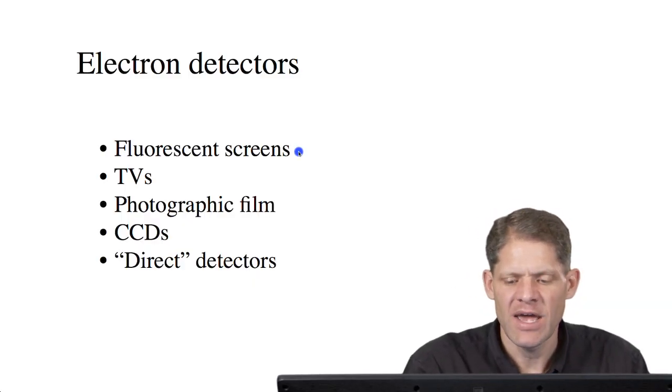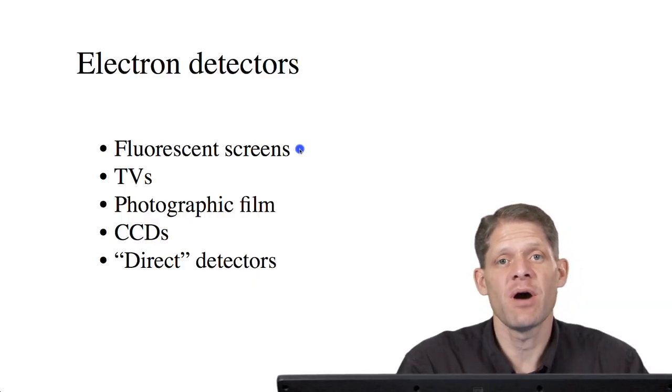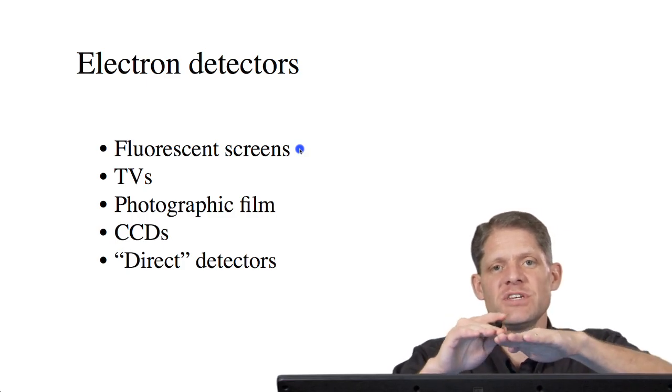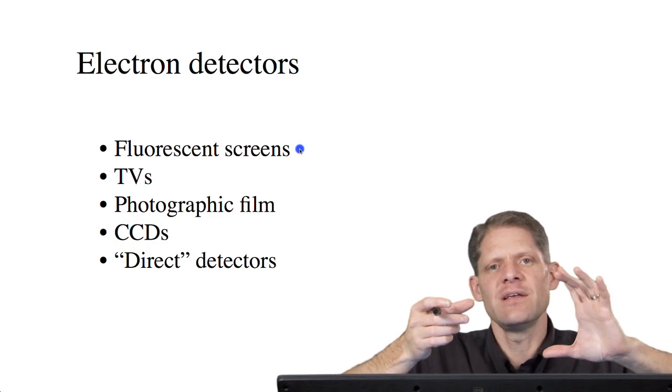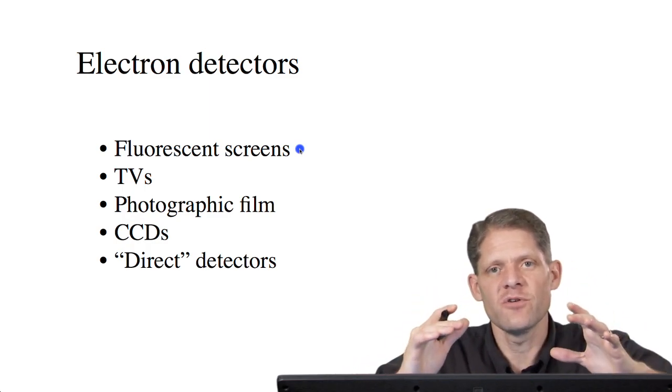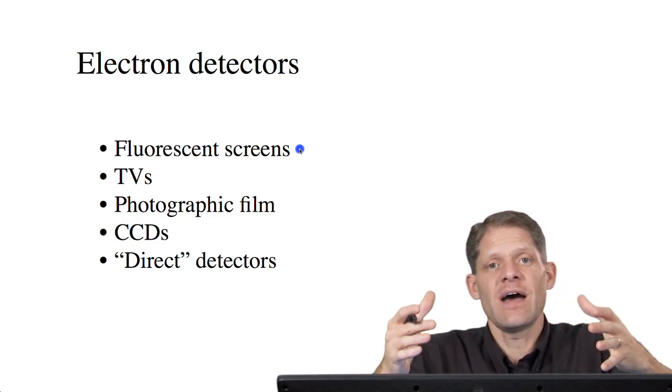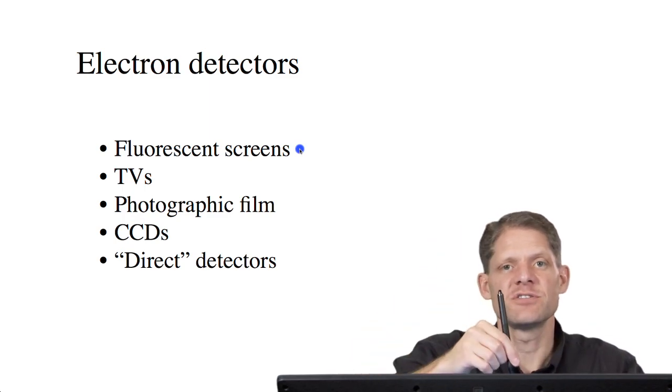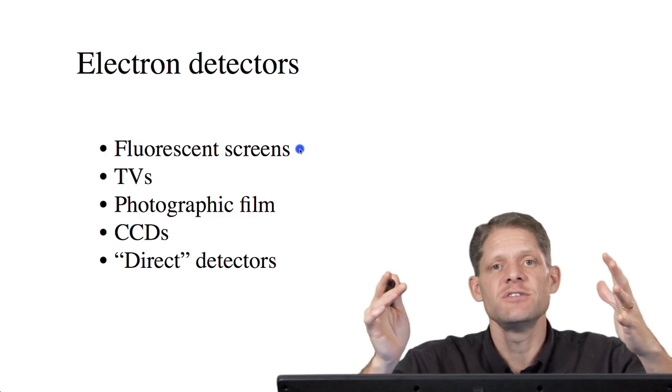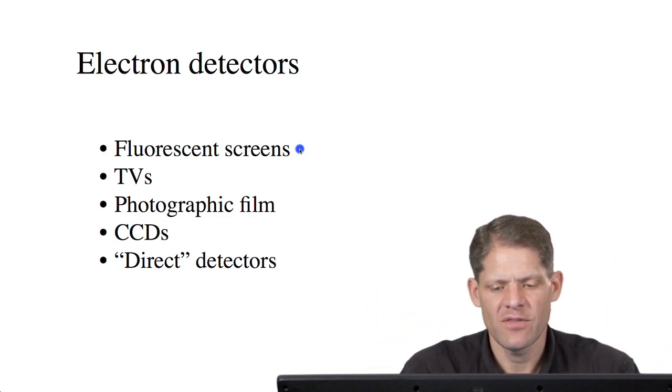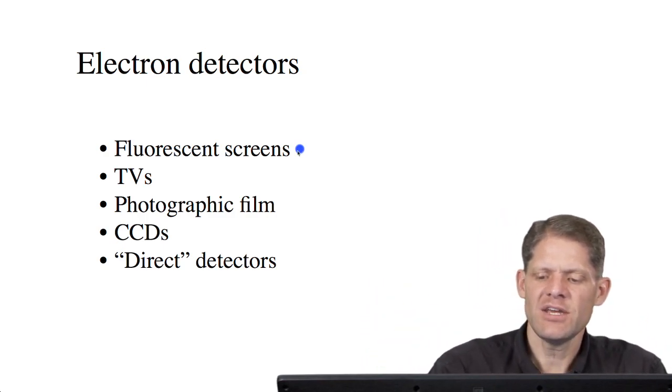Most electron microscopes have a fluorescent screen at the bottom of the column, positioned just below a viewing screen of thick leaded glass that allows you to look through and see in a live fashion where the electrons are hitting. As the electrons hit this fluorescent screen, green photons are emitted and you can see the image.